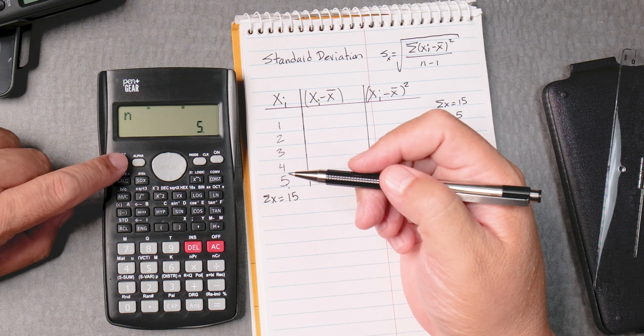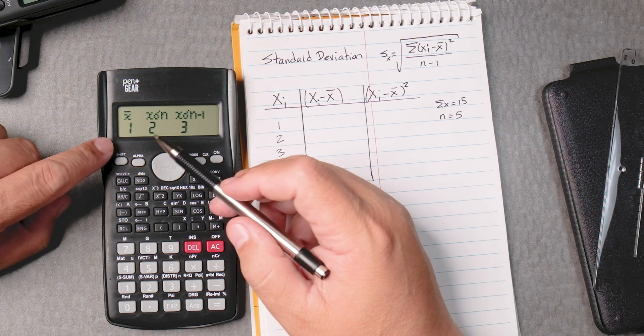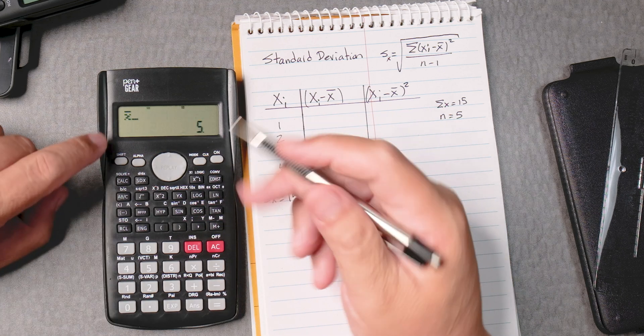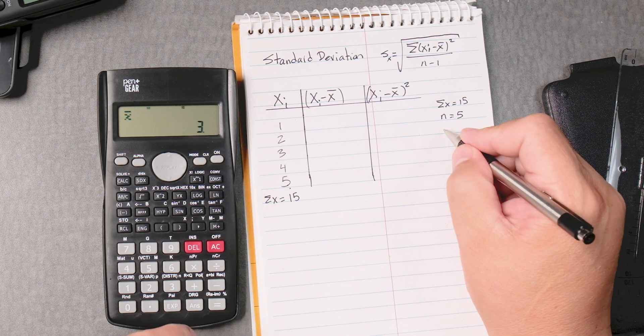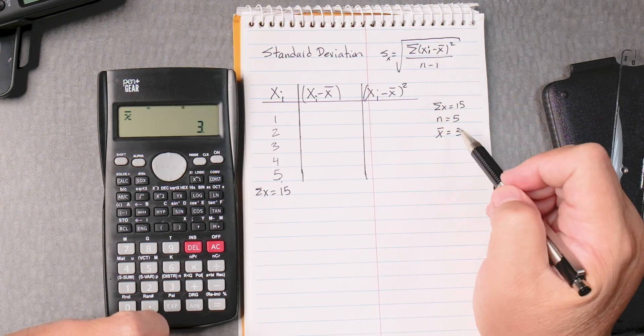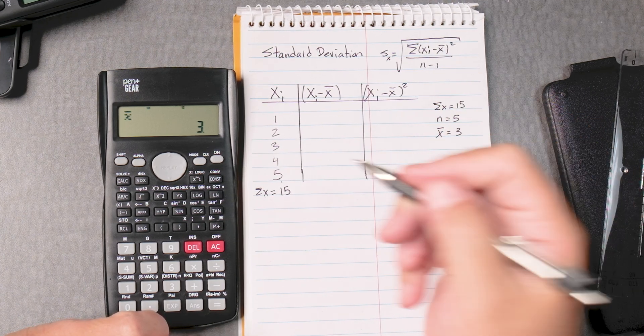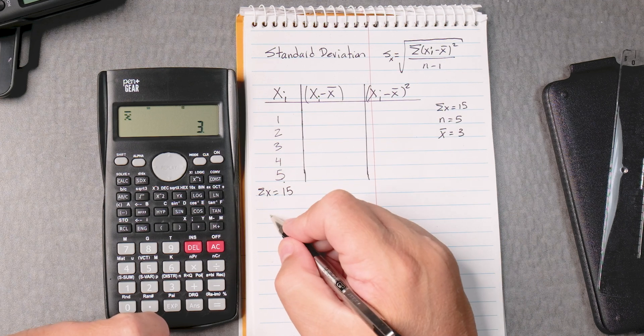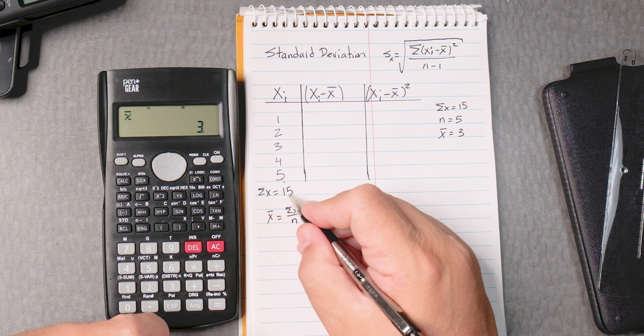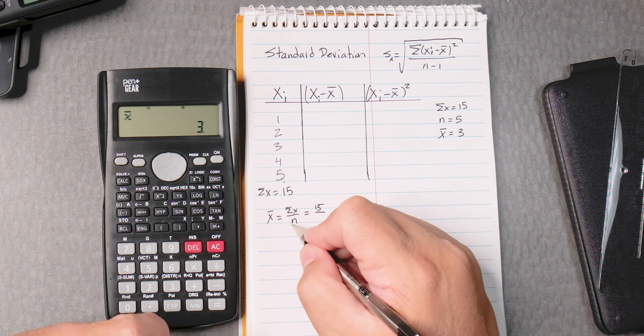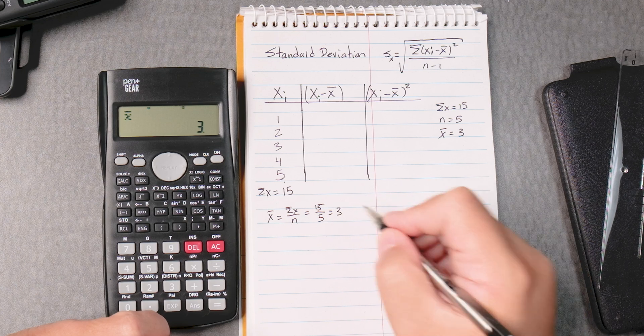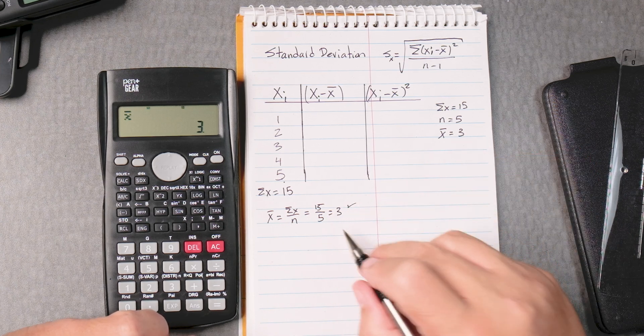And if we press shift number 2, we can find the mean. So we press 1 and then equals, and it tells us the mean, x bar equals 3. Why do we need the mean? Because the formula has the mean. So we can calculate the mean, x bar equals the sum of x over n. We have the sum of x, that's 15, and n, we know how many we have. We have 5. So that gives you 3. So the calculator gave us the right answer.